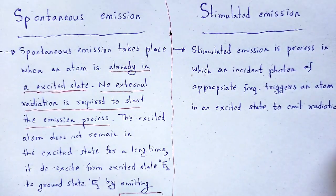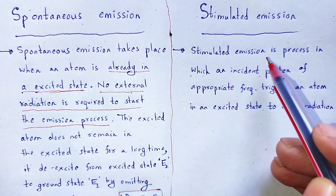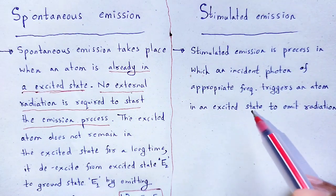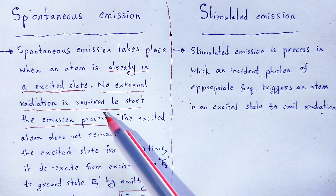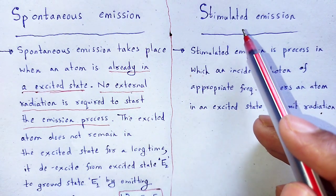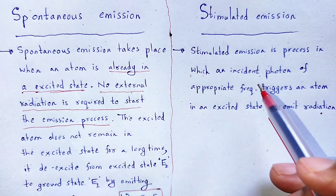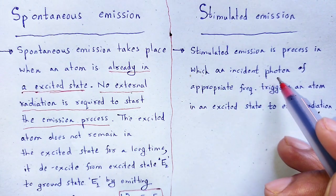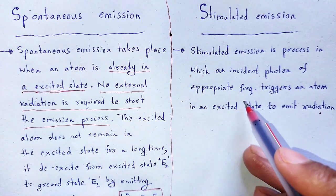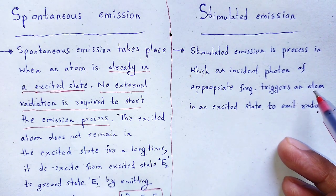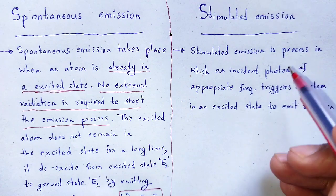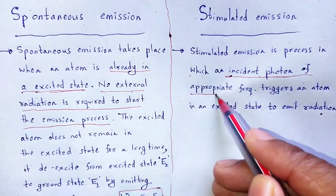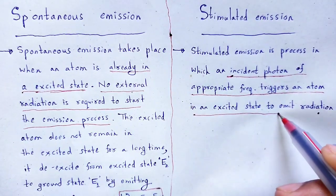For stimulated emission: stimulated emission is the process in which an incident photon of appropriate frequency triggers an atom in an excited state to emit radiation. In case of spontaneous emission, no external radiation is required, but in case of stimulated emission an external radiation is required — a photon having appropriate frequency that triggers the particular atom present in the excited state.